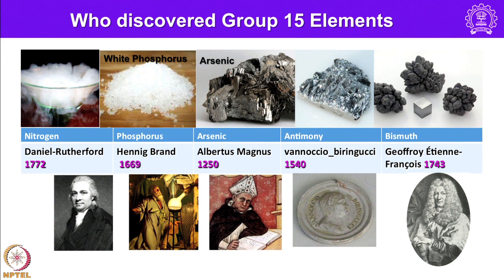Looking at the discoverers of group 15 elements: nitrogen was identified by Daniel Rutherford in 1772; phosphorus was discovered by Henrik Brand in 1669; arsenic was discovered by Albert Magnus in 1250; antimony by Warnoxio Brungussi in 1540; and bismuth by Geoffrey Etino-Francoise in 1743. Pictures of these discoverers are shown along with how the elements look in elemental form — nitrogen is a gas, and also shown are white phosphorus, arsenic, antimony, and bismuth.